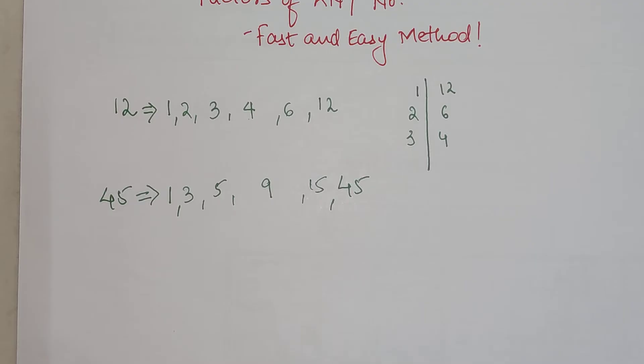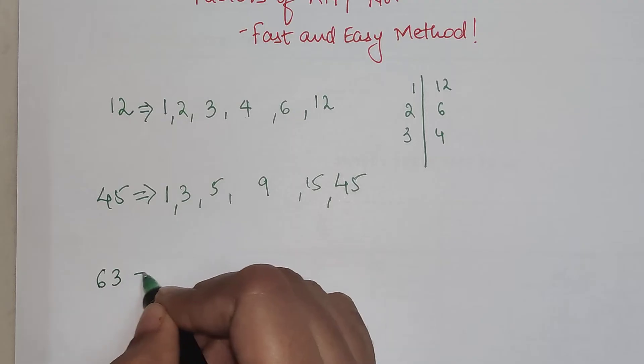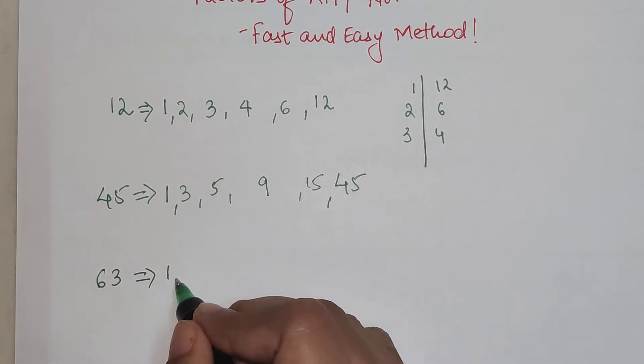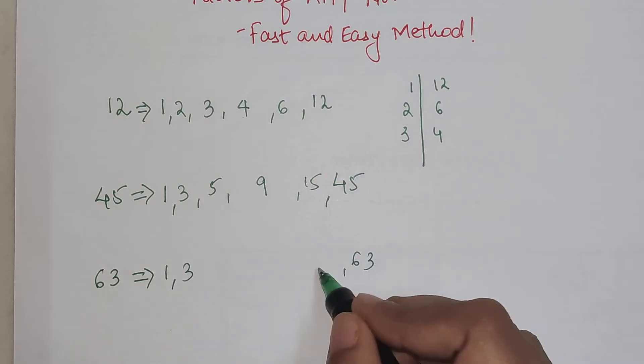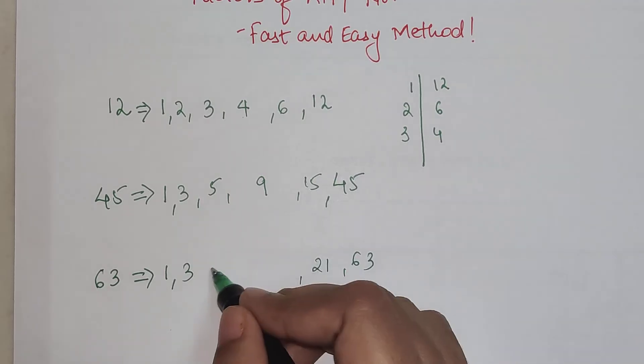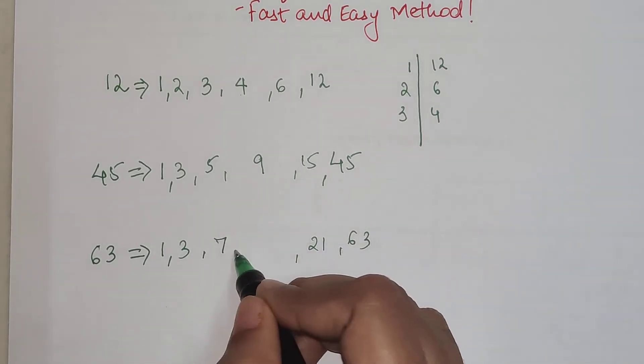Now let's look at another number. We have 63, so 1 and 63. Then we have 3 and 21. Then 4 doesn't divide 63, 5 doesn't, 6 doesn't. We have 7, and then we have 9.